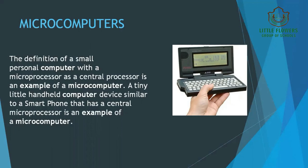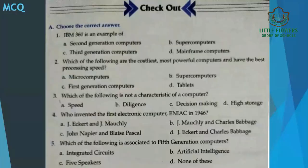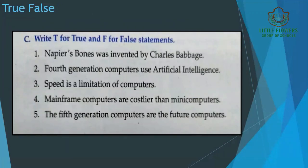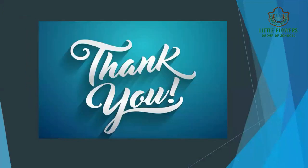This was all about the types of computers. Now we have various exercises given at the back of the book: a puzzle based on what you have studied, MCQs, fill in the blanks with hints given in the box, true and false to be done in your notebooks, and match the following — matching column A with column B. All these questions are to be done in your notebook. Thank you all for listening so patiently.